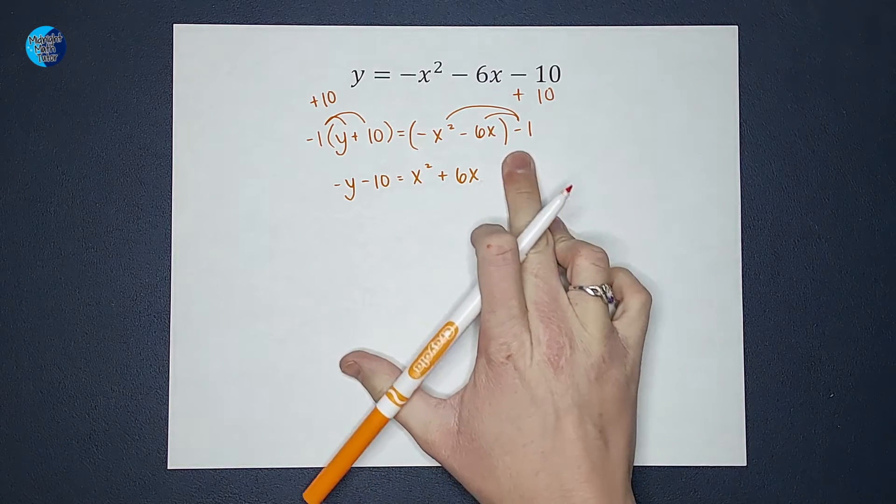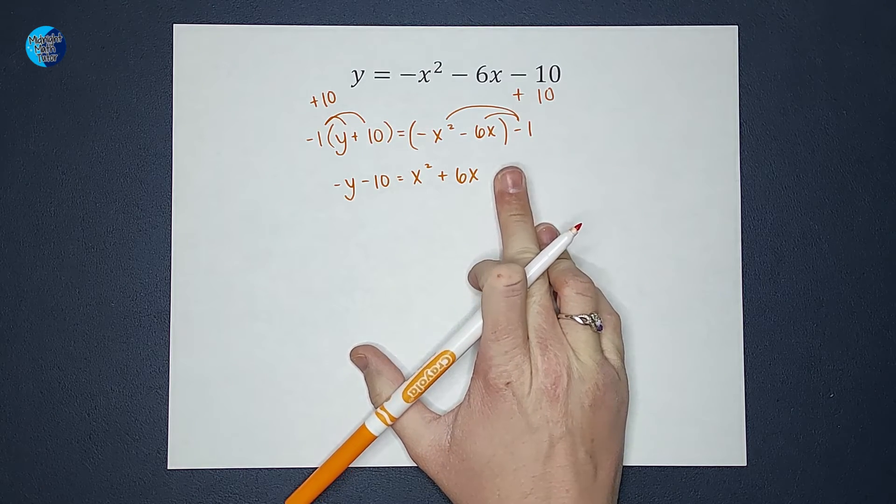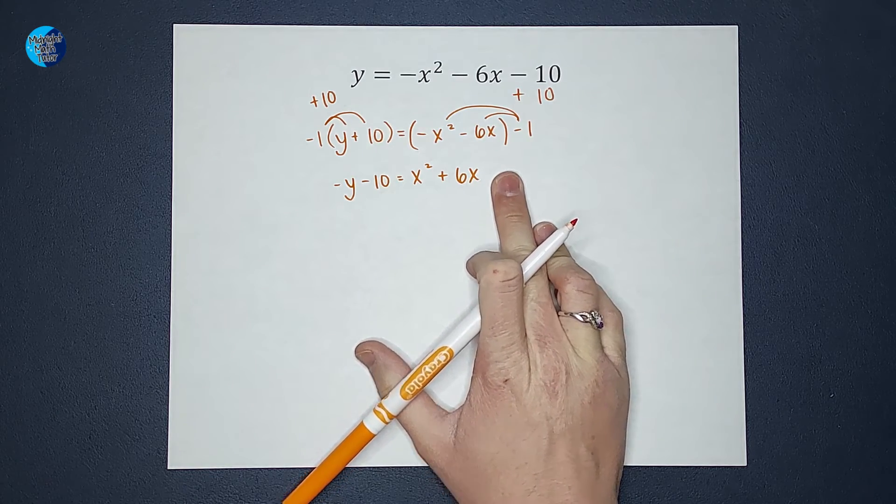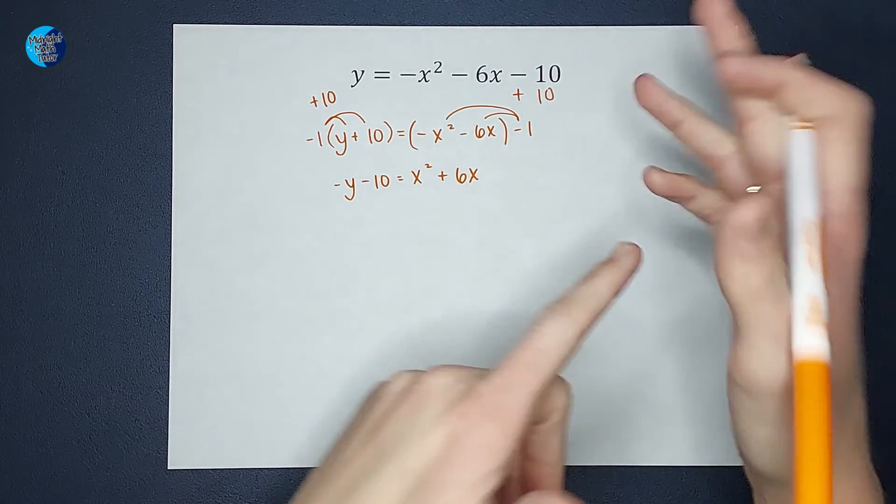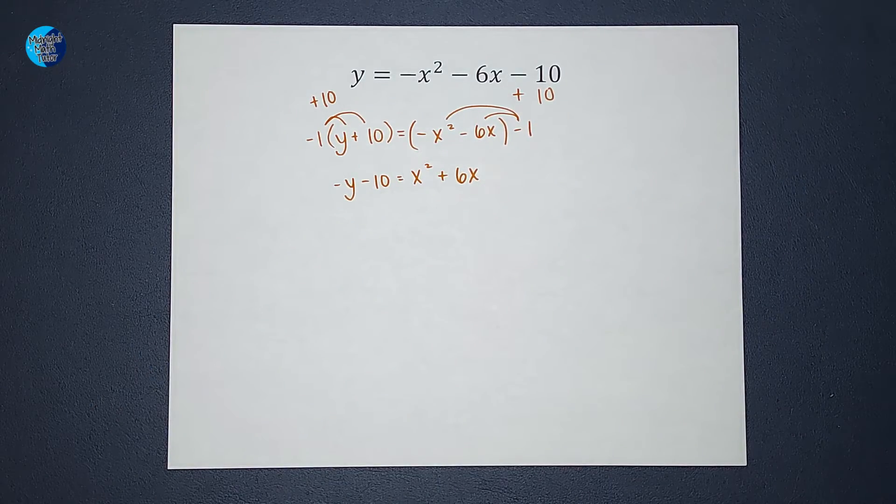When I'm completing the square, I'm trying to figure out what number I add or subtract here to make this side factor to a parentheses squared. How do I figure out that number?